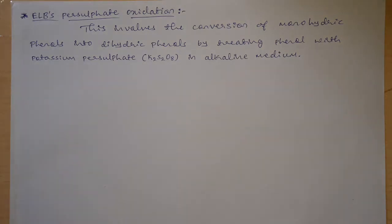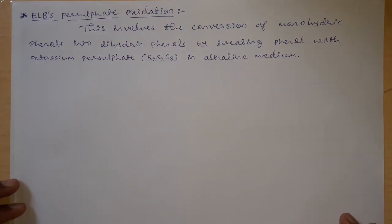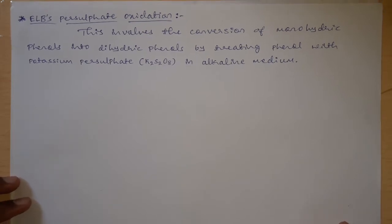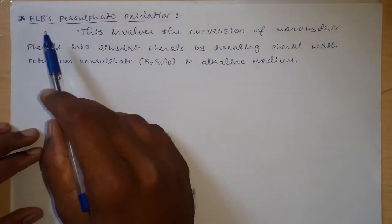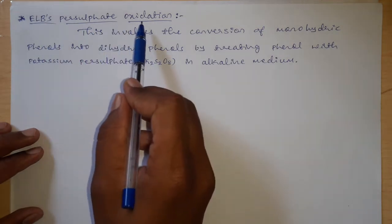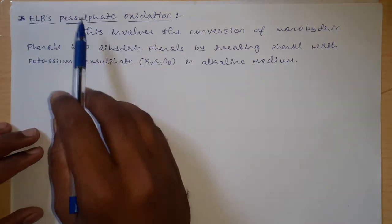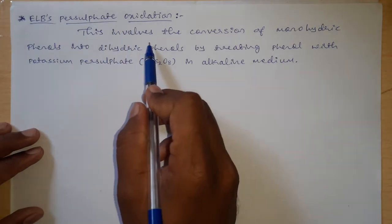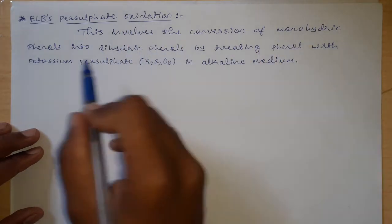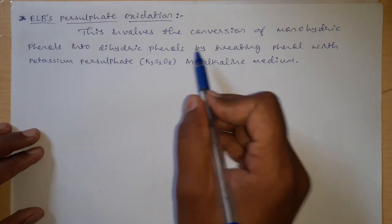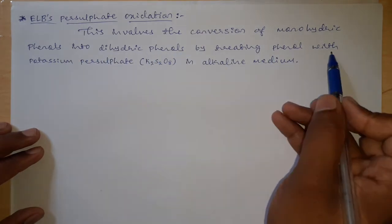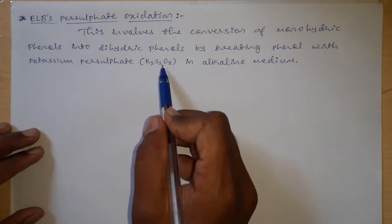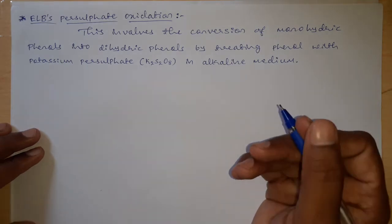Hello dear students, welcome to chemistry class. In this class we are discussing one named reaction, that is Elbs' persulfate oxidation. This involves the conversion of monohydric phenols into dihydric phenols by treating phenol with potassium persulfate, that is K2S2O8, in alkaline medium.